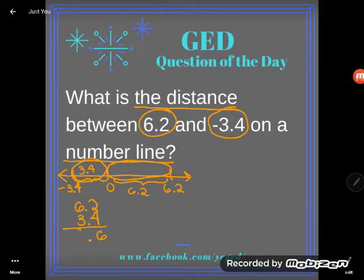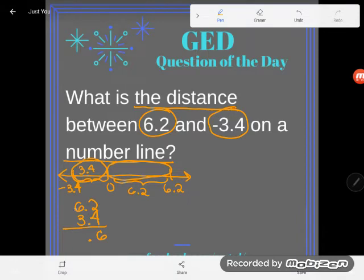2 plus 4 is 6, or 2 tenths plus 4 tenths is 6 tenths, and 6 plus 3 is 9, and I get 9.6.